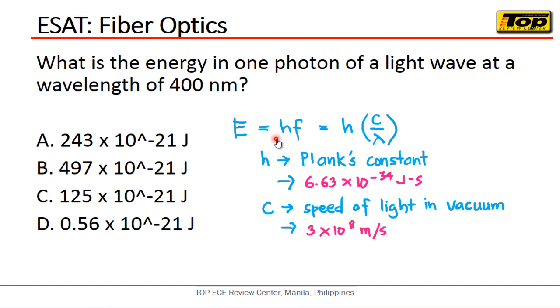Let's show the formula we're going to use. The formula for the energy of one photon is E equals hf, where h is Planck's constant. Okay, that is 6.63 times 10 to the negative 34 joules seconds.